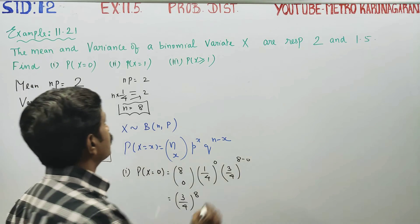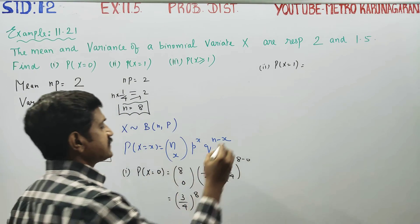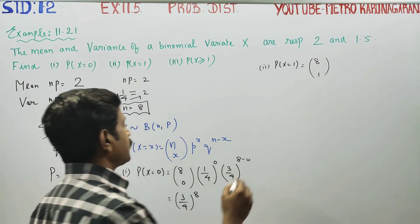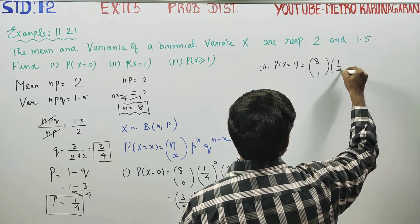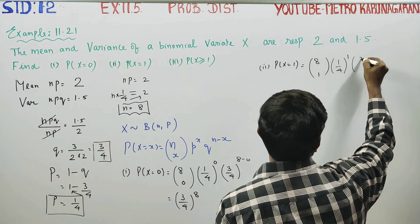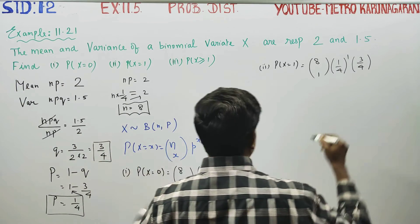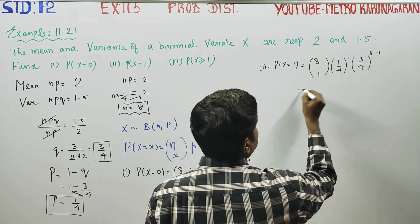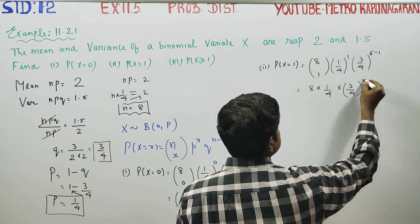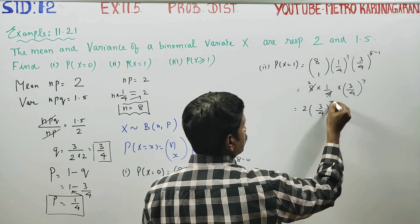After finishing this, second question is probability of x is equal to 1. Using the formula, 8C1, p power x, p is 1 by 4 power x is 1. Q power, q power is 3 by 4, 3 by 4 whole power n minus x. Now, n is 8, 8 minus 1. 8C1 is 8, this is 1 by 4, this is 3 by 4 whole power 7 is your second answer.